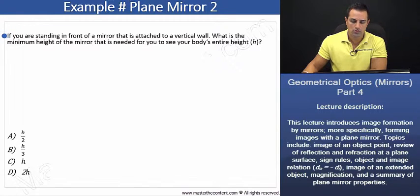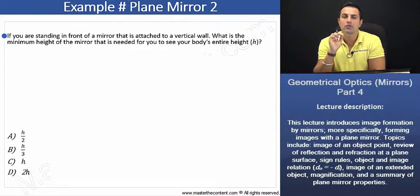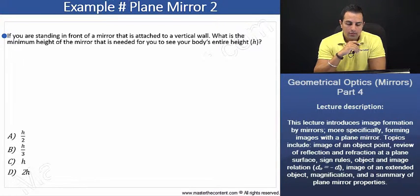Example, plane mirror 2. Well, let's begin by reading our problem here. If you are standing in front of a mirror that is attached to a vertical wall, what is the minimum height of the mirror that is needed for you to see your body's entire height?